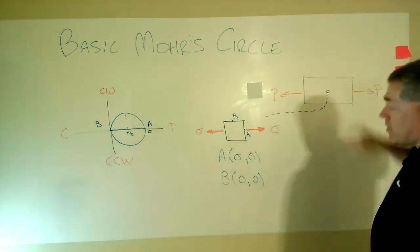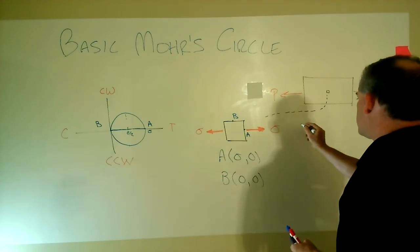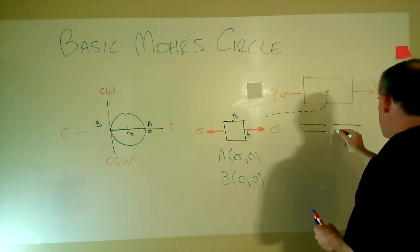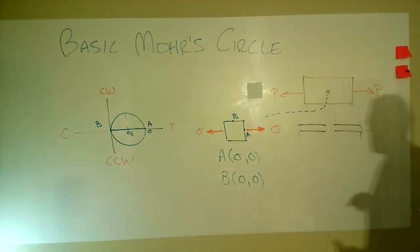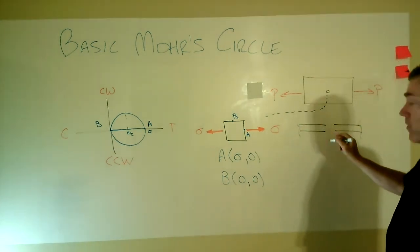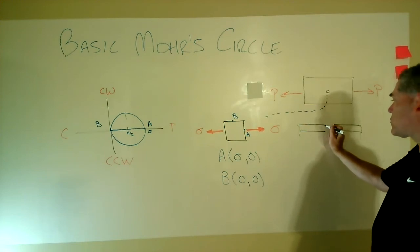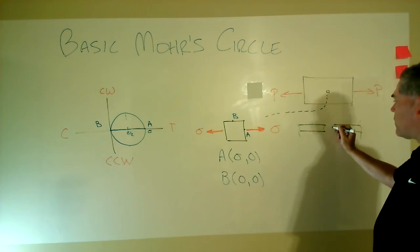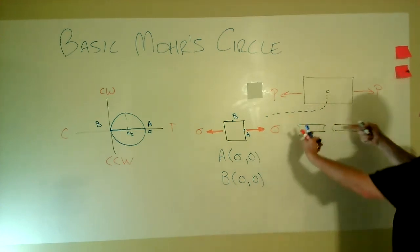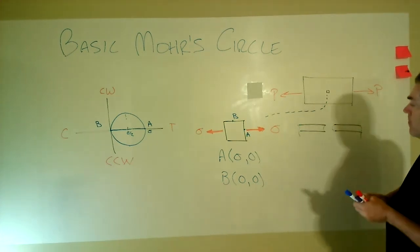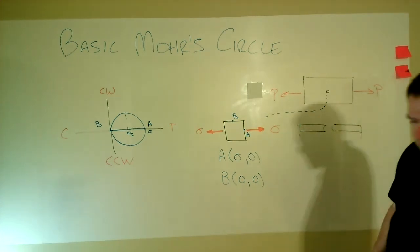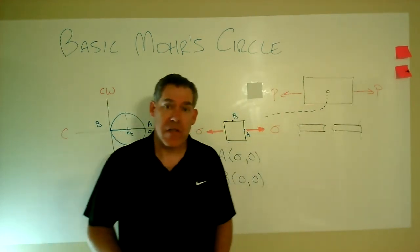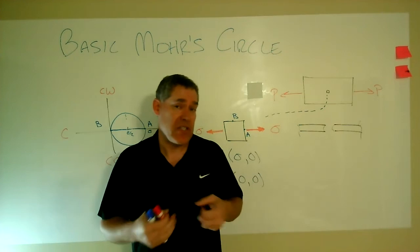So when this thing failed and pulled apart, what you're going to see at that failure location, we don't care about what's going on out here in the ends. We care about what's happening right here. And whether it's circular or flat, what you're going to see are little regions that are 45 degrees and the two fit together. The two halves will fit together. They're sometimes hard to put back together, but they're going to fit together. And you're going to see these little 45 degree things.